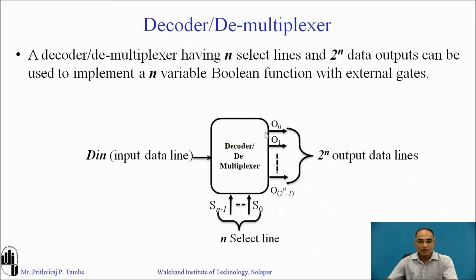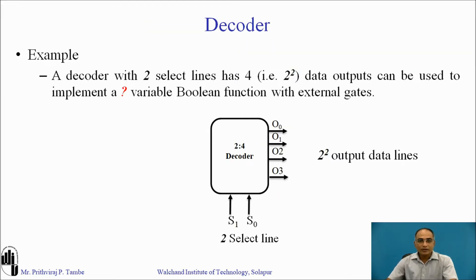This is a simple block diagram of a demultiplexer or decoder. You can use this combinational device to implement any boolean function. Here is one example: a decoder with two select lines has four data output lines. The relation is 2 to the power 2, and it can be used to implement a two-variable boolean function.